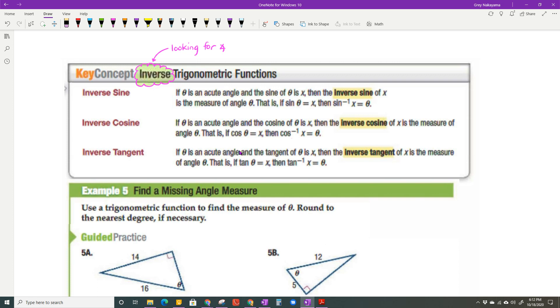On your calculator, that means you're going to use the second button with a trig button. Some calculators already have that button, and it would look like sine to the negative 1, cosine to the negative 1, or tangent to the negative 1. Those are the inverse trigonometric functions, and that's what you're going to use whenever you're looking for an angle.